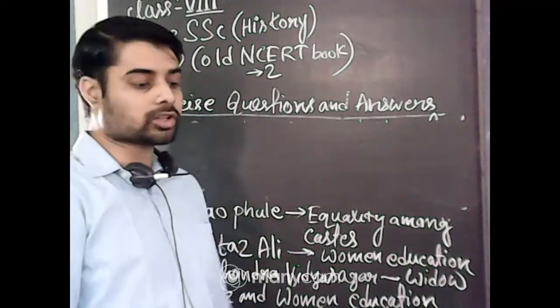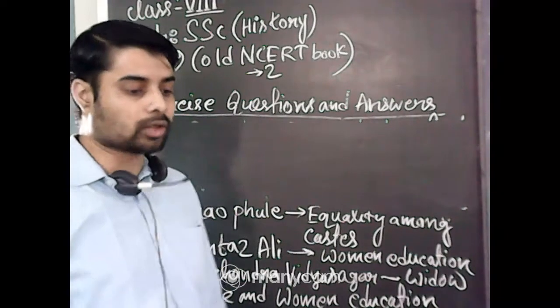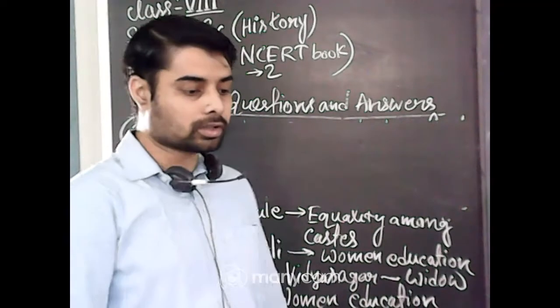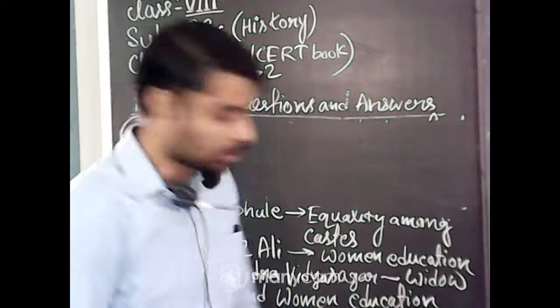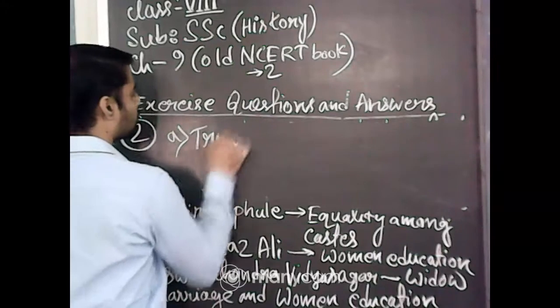In the true and false segment, number 2, 4 sentences given in your book. The first one, when the British captured Bengal, they framed many new laws to regulate the rules regarding marriage, adoption and inheritance of property. And the answer is, this sentence is absolutely true.